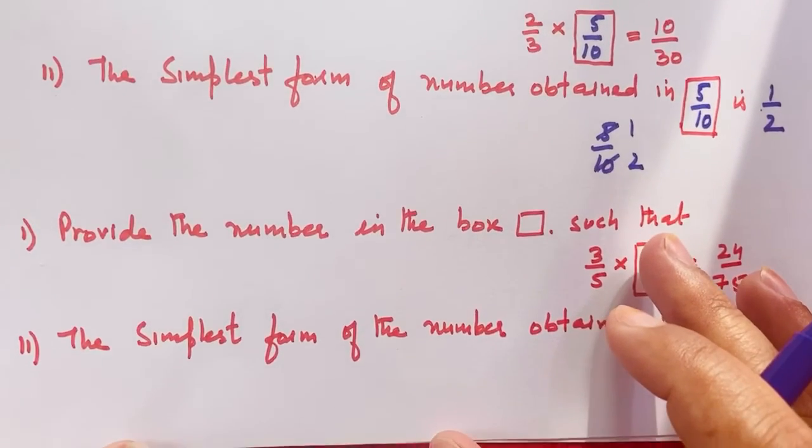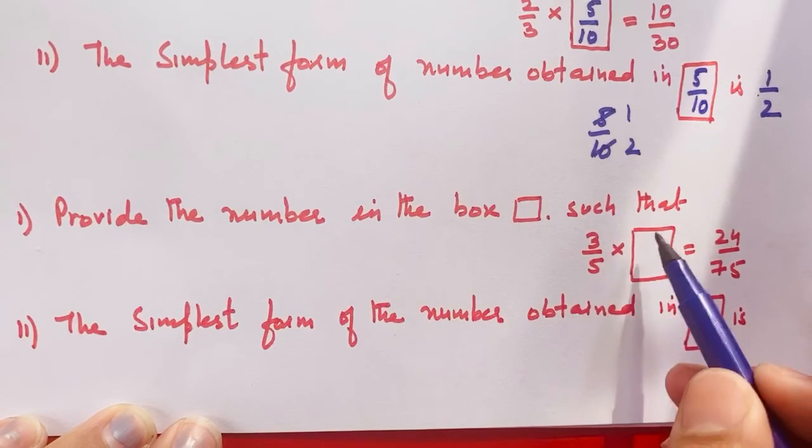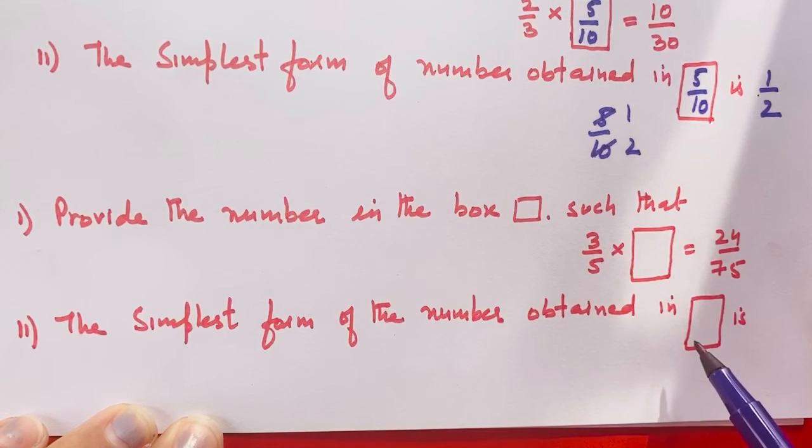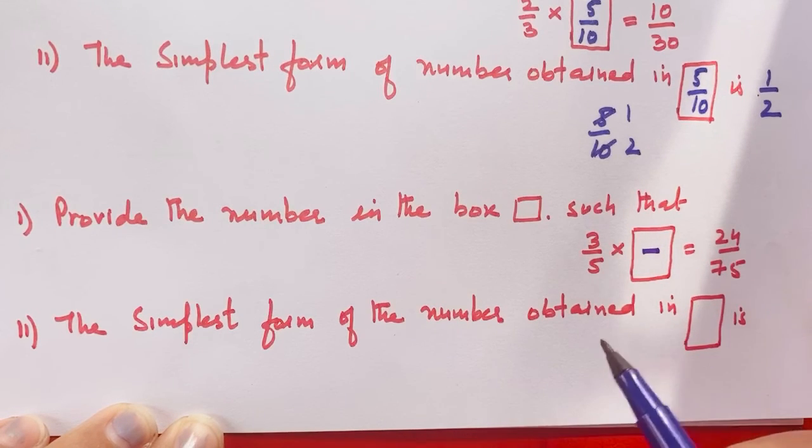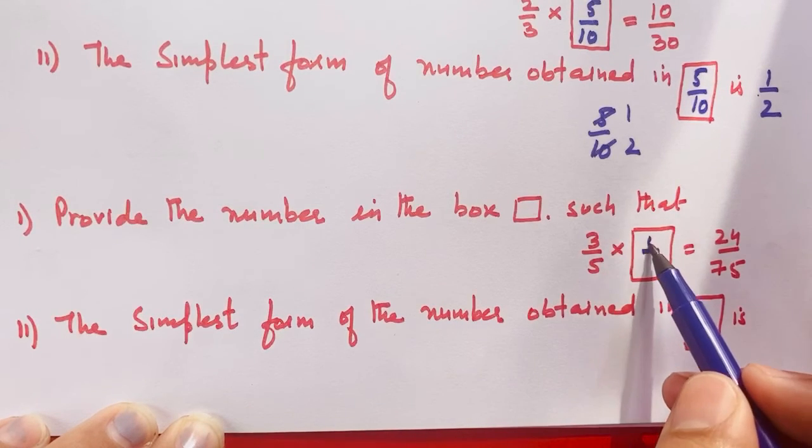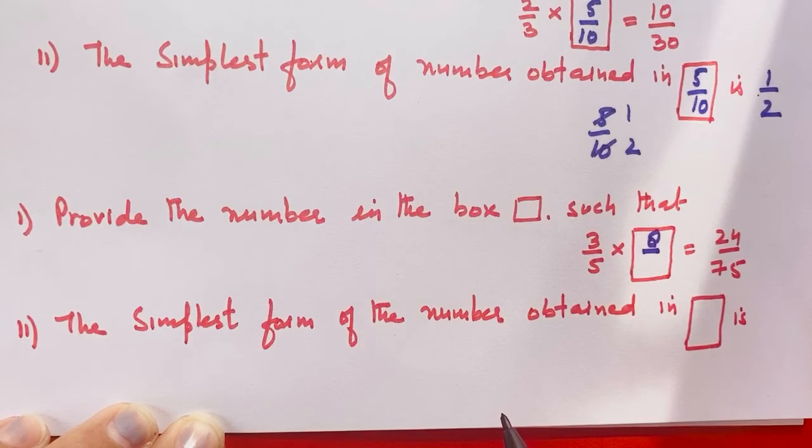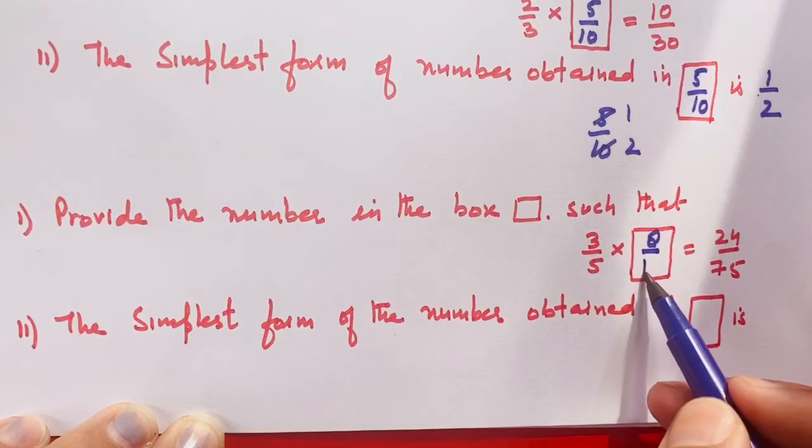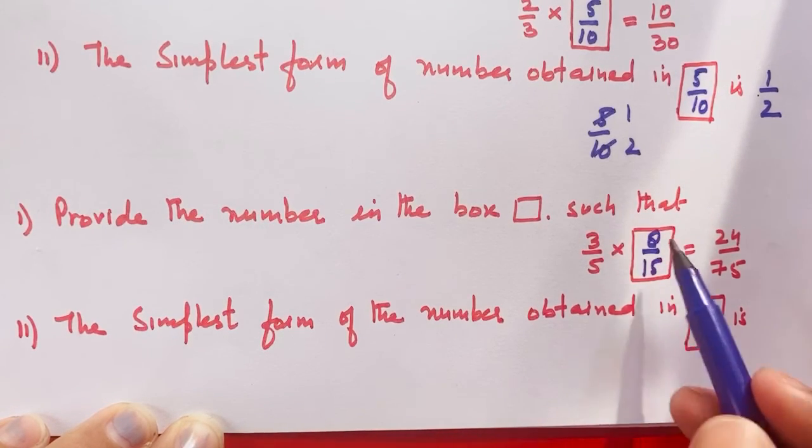Provide the number in the box. 3 upon 5 multiply by dash equals 24 upon 75. Numerator: 3 times 8 is 24. Denominator: 5 times 15 is 75. So what have you got? 8 upon 15.